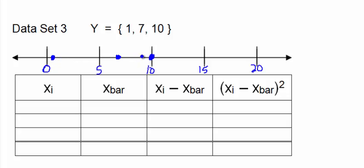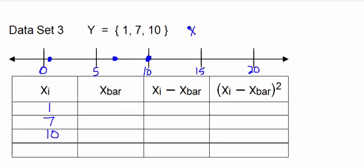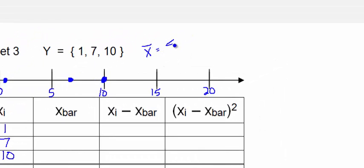So we list our X's: 1, 7, 10. To compute X bar we add up the X's and divide by how many we have. So 1 plus 7 is 8 plus 10 is 18, so we have 18 divided by 3, which is equal to 6.